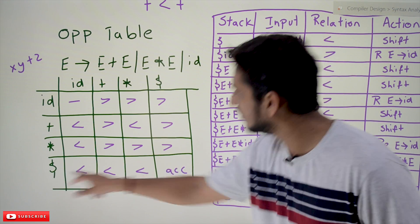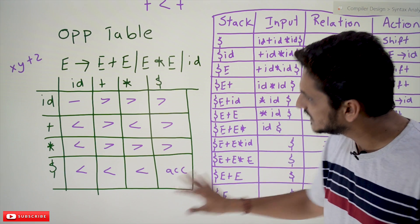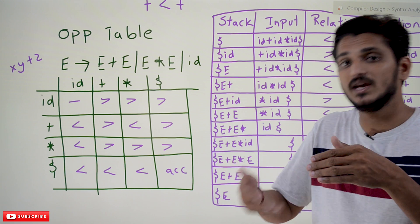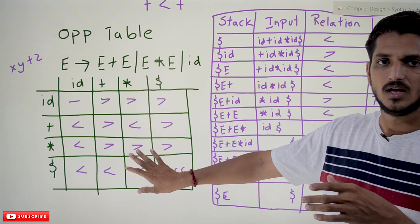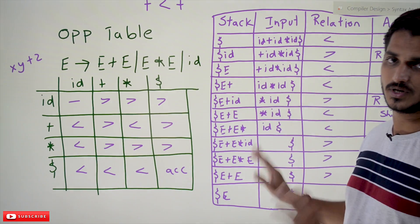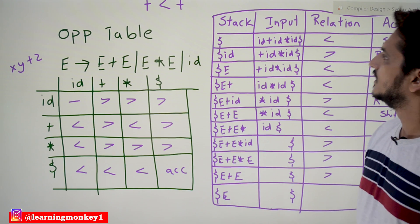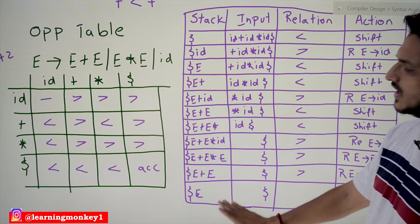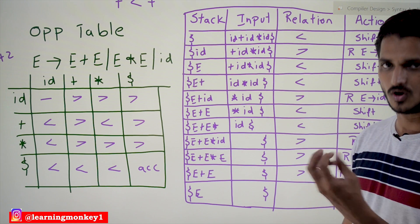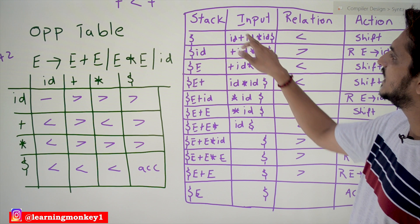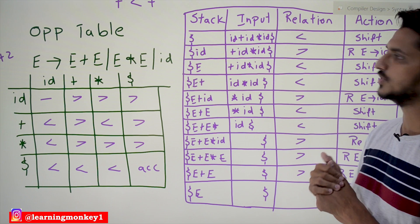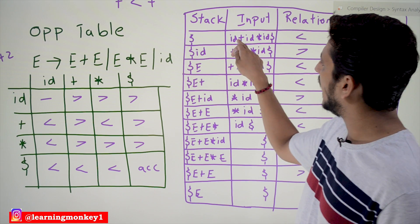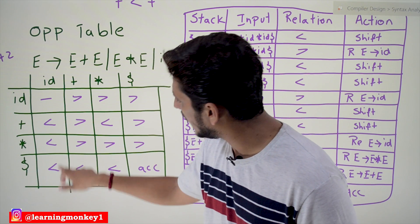Dollar < dollar means accepted. This is how we construct the parsing table according to our requirements. You will get further clarity through the example. Now, how do we parse an input string in operator precedence parsing? We take a stack — initially containing dollar — and the input string id + id * id with dollar appended at the end. We check dollar vs id in our precedence table.